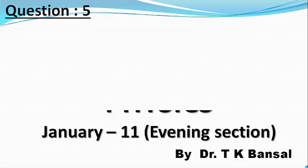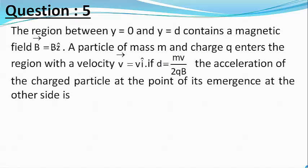Our next question from physics part is: the region between y equals 0 and y equals d contains a magnetic field B vector equals B z cap. A particle of mass m and charge q enters the region with velocity v vector equals v i cap.